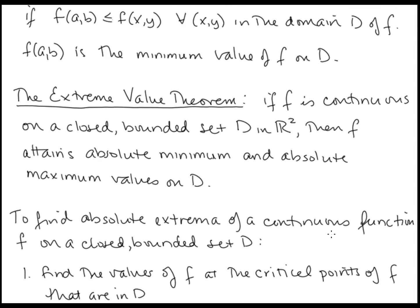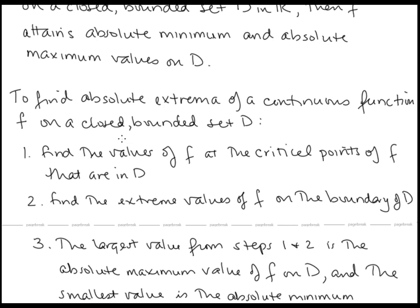We have an Extreme Value Theorem here as well: if f is continuous on a closed bounded set D in R², then f attains absolute minimum and maximum values on D. To find absolute extrema of a continuous function f on a closed bounded set D in R², we find the values of f at the critical points inside D, find the extreme values of f on the boundary, and then the largest value from those two steps is the absolute maximum and the smallest is the absolute minimum. This is analogous to functions of one variable, except our domain is now a closed bounded set in R² with a boundary curve rather than just an interval with endpoints.